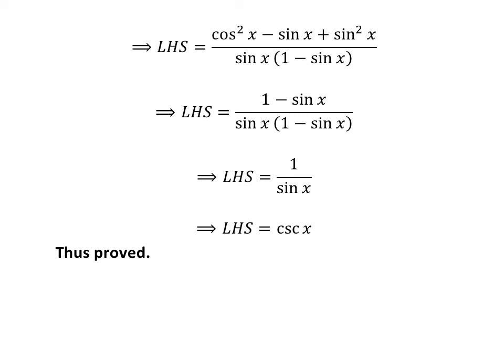So the left hand side of the identity is equal to cosecant of x, which equals the right hand side. Thus, we have proved the identity.